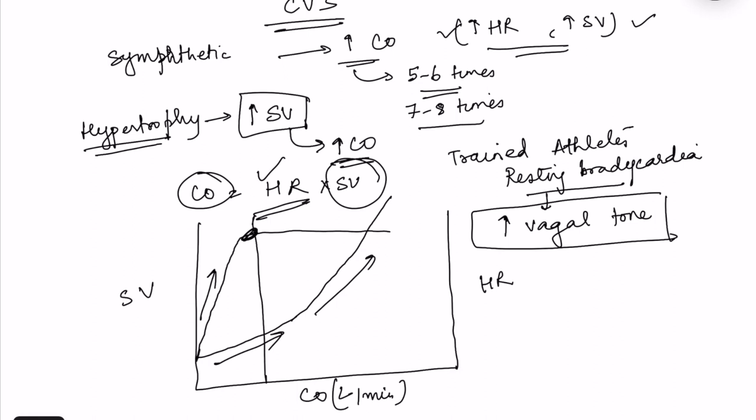In trained athletes, because of increased vagal tone and resting bradycardia, the resting heart rate is much lower, giving a much greater reserve for heart rate increase during exercise. The maximum achievable heart rate is the same for trained and untrained individuals, but the reserve is larger. Additionally, stroke volume is greater in trained athletes, so the maximum stroke volume reached is also higher — this is why resting bradycardia is very beneficial.